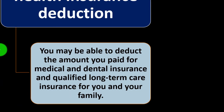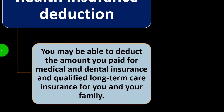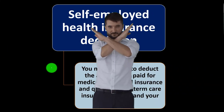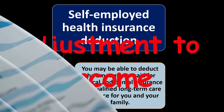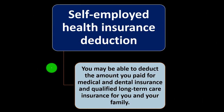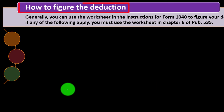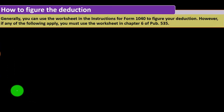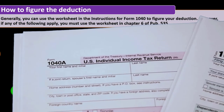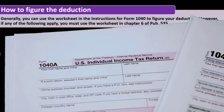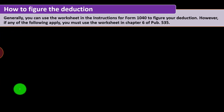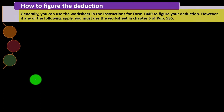Self-employed health insurance deduction: you may be able to deduct the amount you paid for medical and dental insurance and qualified long-term care insurance for you and your family. This gets more complex because there may be restrictions — you might not take that deduction on Schedule C. It may be taken as an above-the-line deduction or deduction for adjusted gross income if you qualify. Generally, use the worksheet in the Form 1040 instructions to figure your deduction, since it flows through Schedule 1 to the 1040.